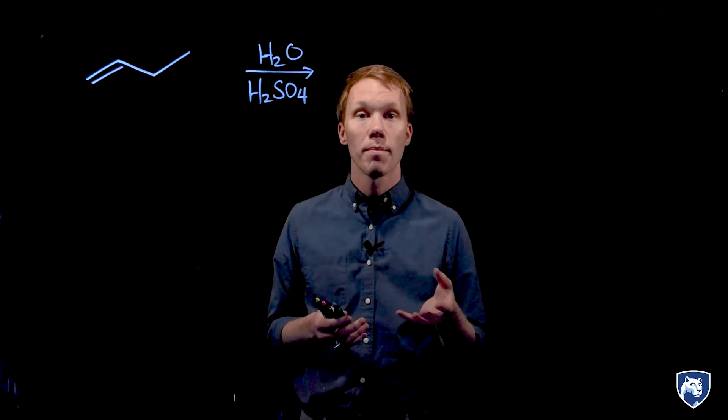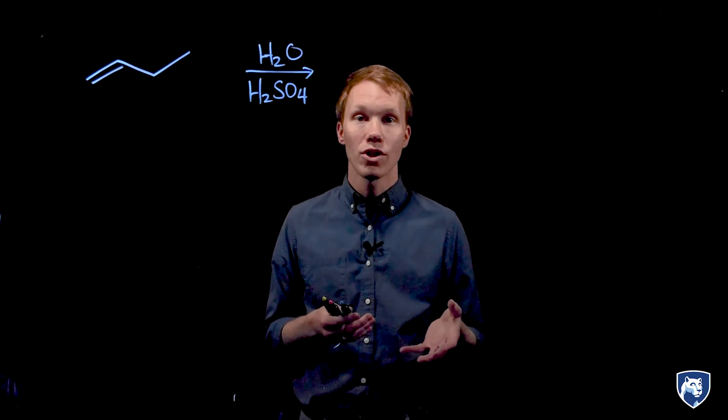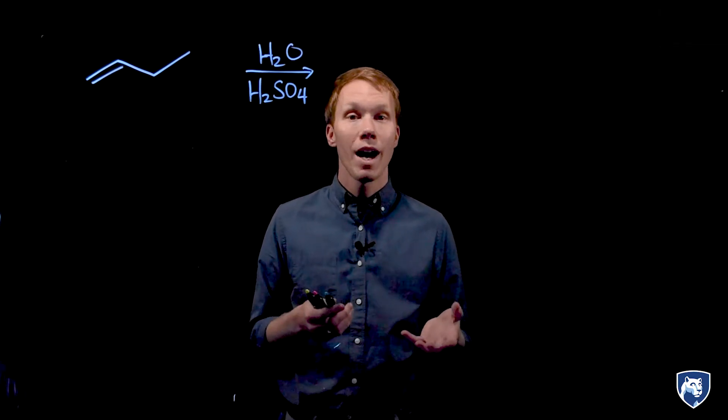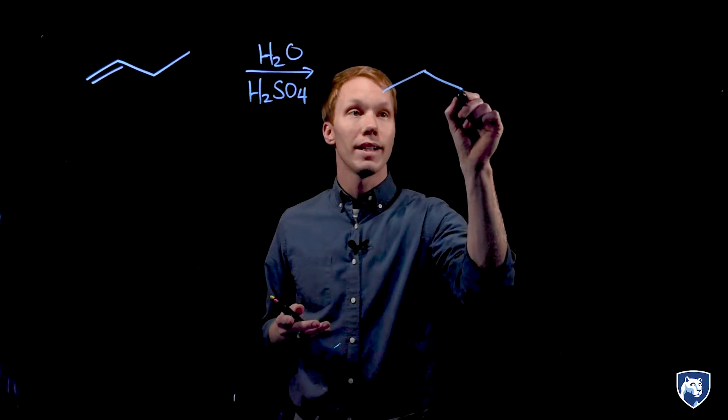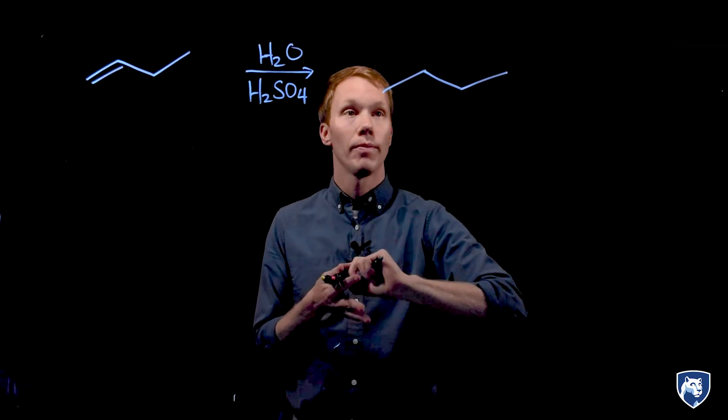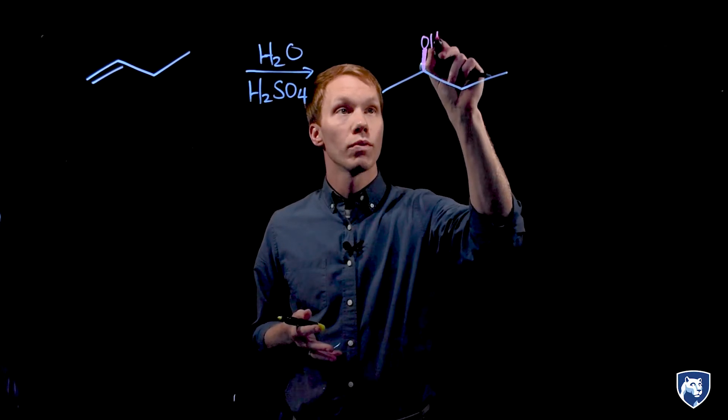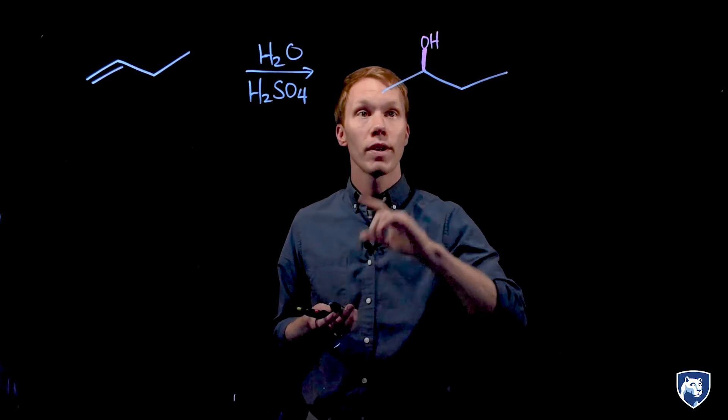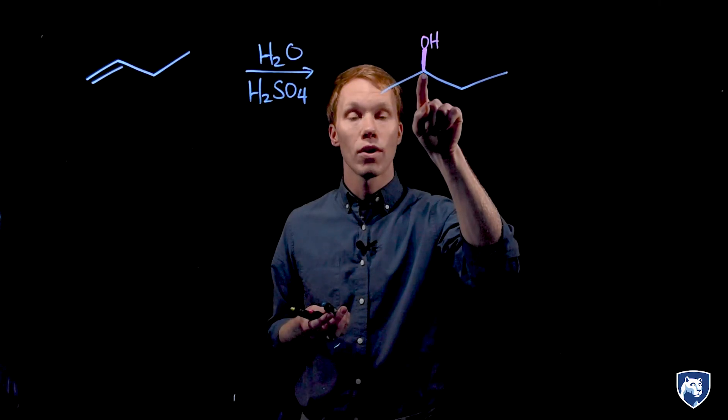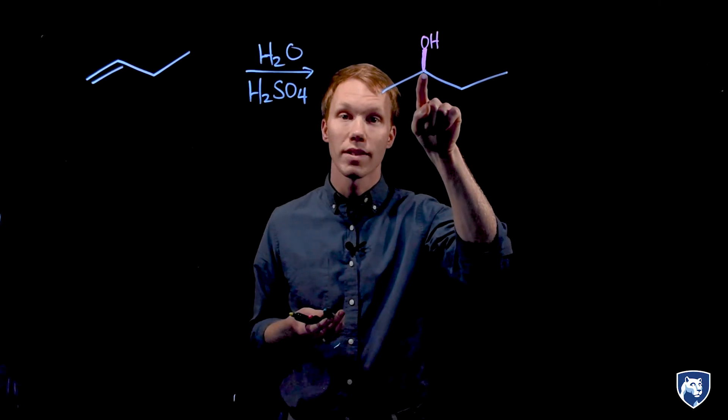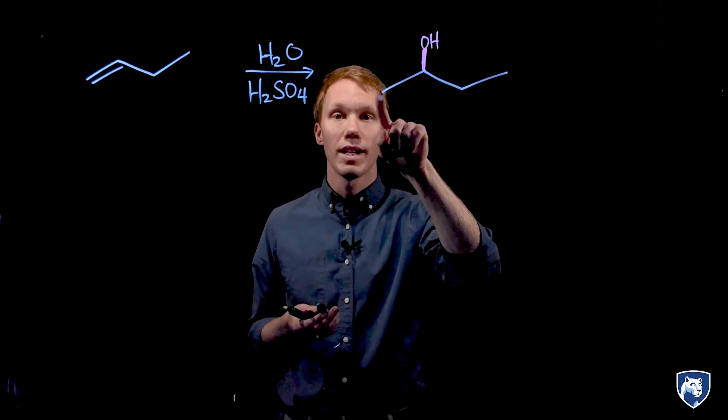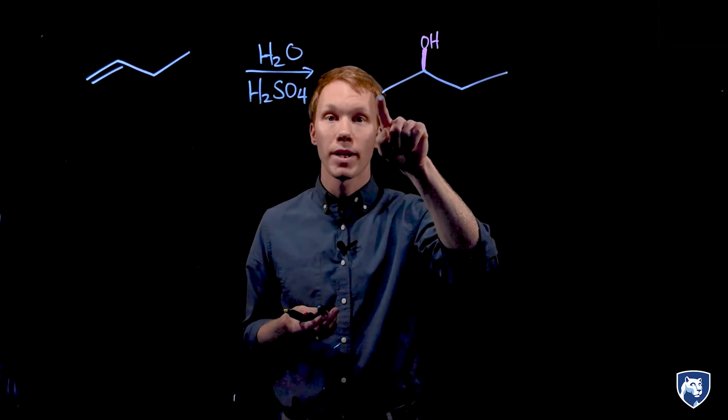In this reaction, the components of water, H and OH, are added to the double bond with the help of an acid catalyst. The product that we isolate in the lab is an alcohol, and this product is produced regioselectively. We preferentially add the alcohol group to the more substituted site, here this is secondary, and the hydrogen is added to the primary site.